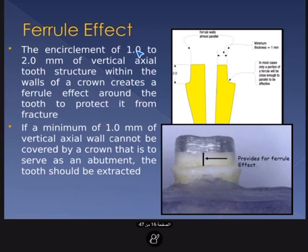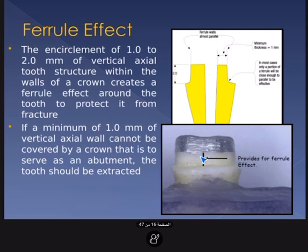The ferrule means complete encirclement — coverage from all sides — of one to two millimeters of the vertical axial tooth structure within the walls of a crown. It acts as a band around the tooth to protect it from fracture. If a minimum of one millimeter of the vertical axial wall cannot be covered by a crown, it is better to go for extraction of that tooth.